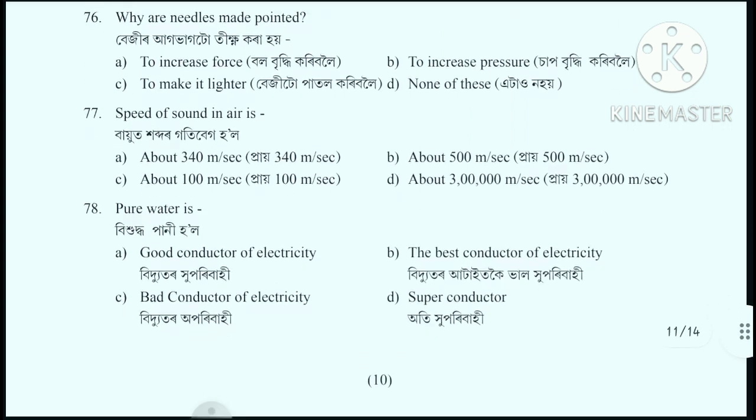Question number 78: Pure water is - pure water. The correct answer is option C: Bad conductor of electricity, meaning it is a poor conductor of electricity.